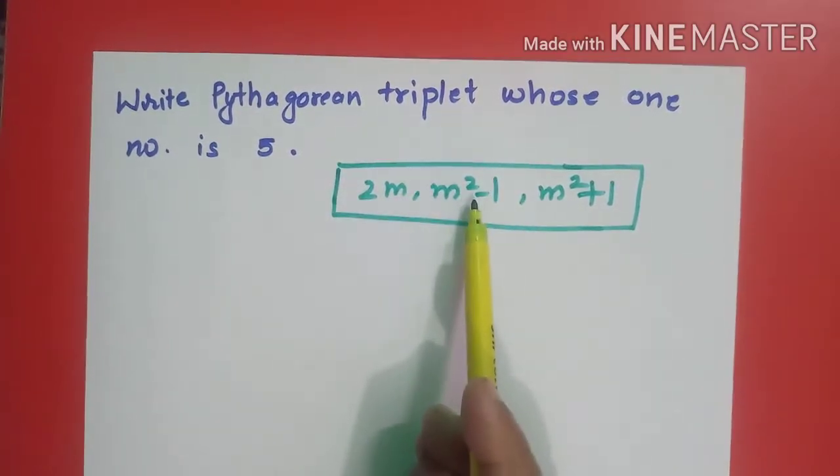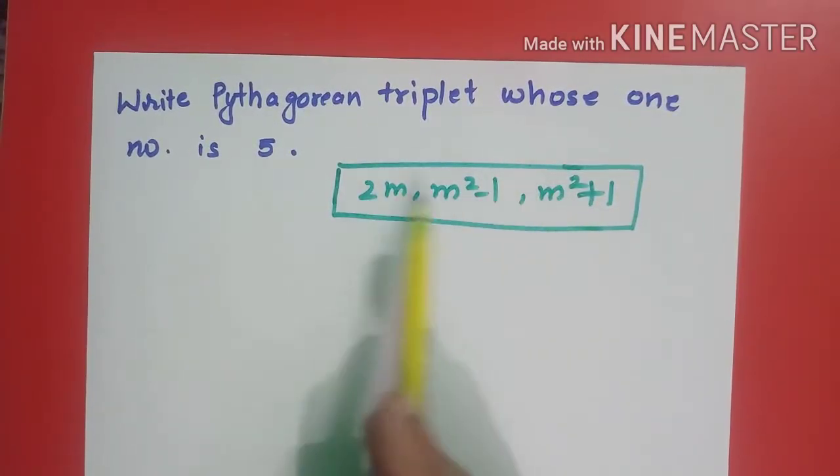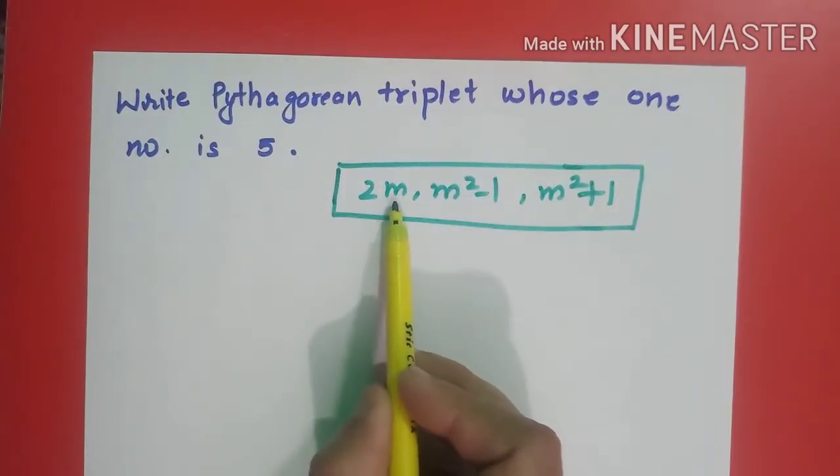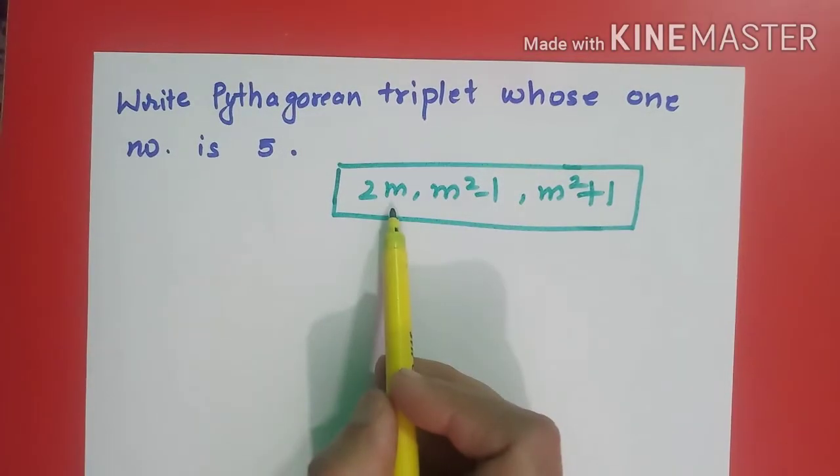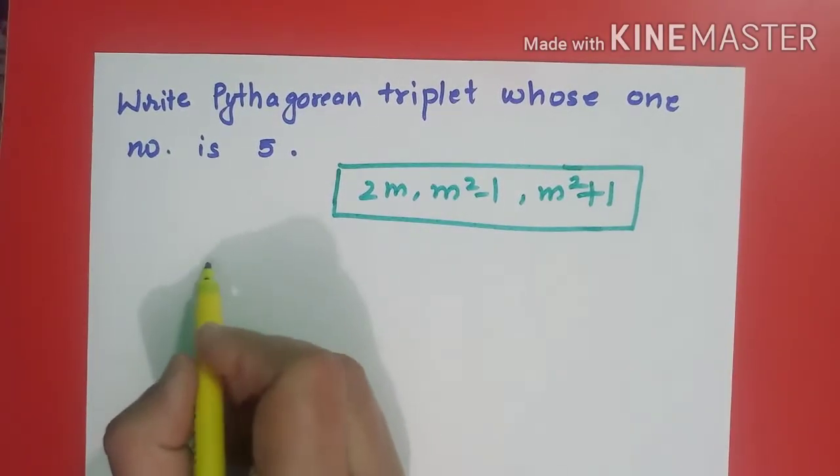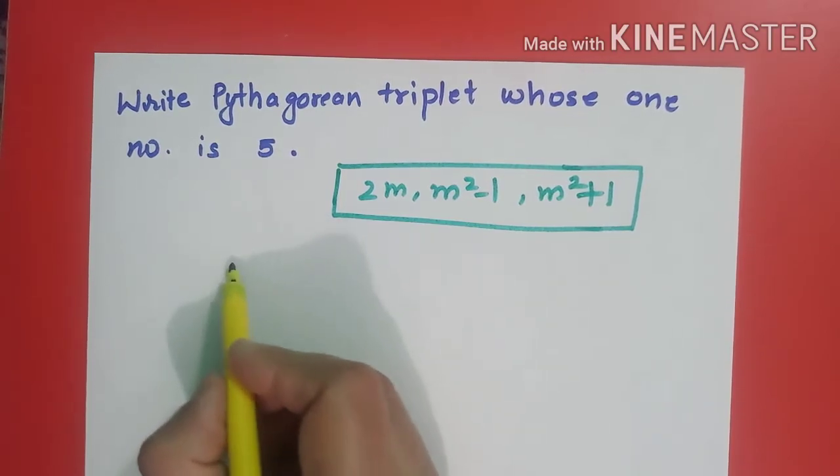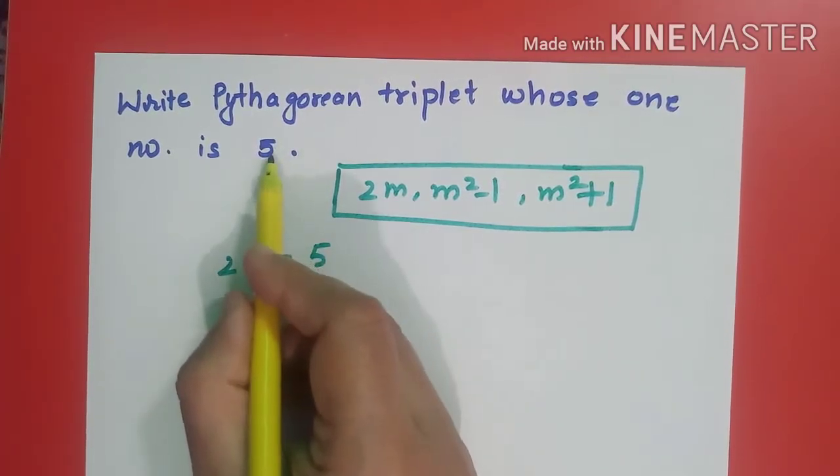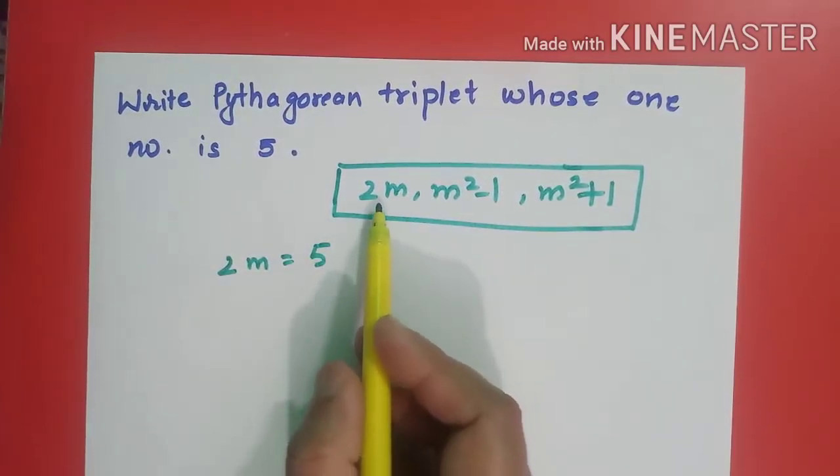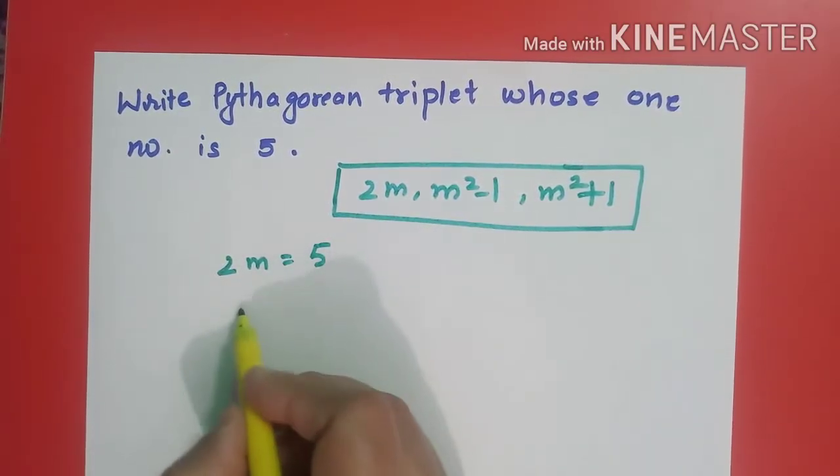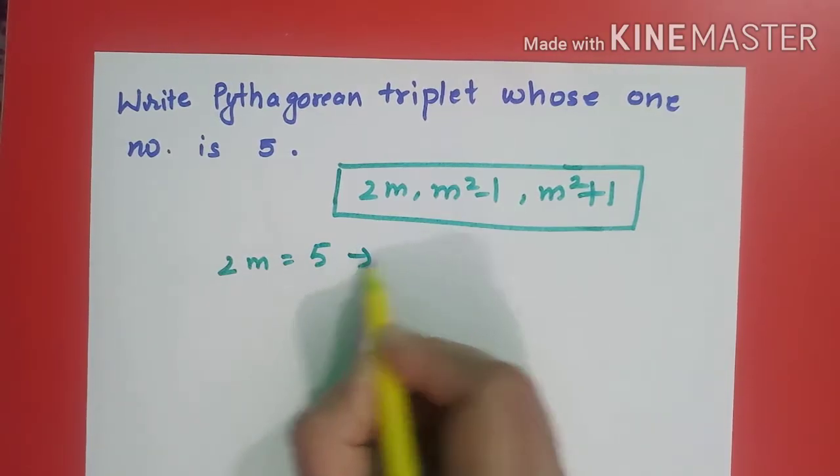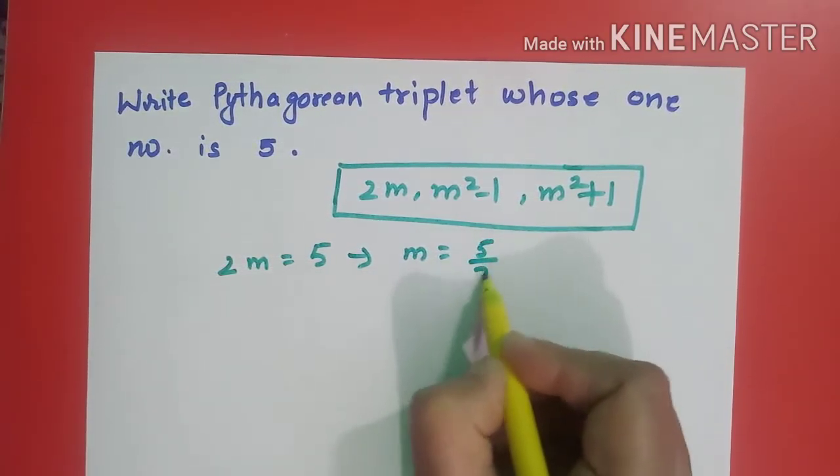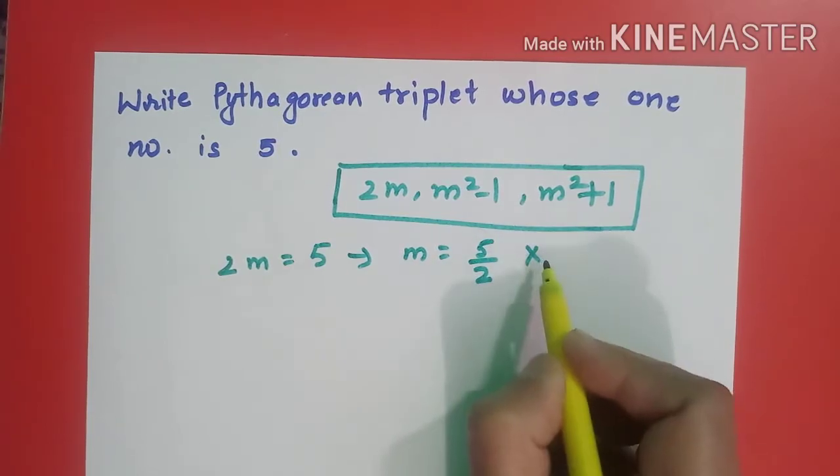It can be this, this, or this, right? And what do we need to do? Find the remaining two numbers. But what do we need to find out first? We need to find out the m value. Then I will find out the remaining two numbers. So what will I do? I will assume that. I suppose that the first term, 2m, is 5. If 2m is 5, then m is equal to 5 upon 2, which is not possible. Why? Because m has to be a natural number.